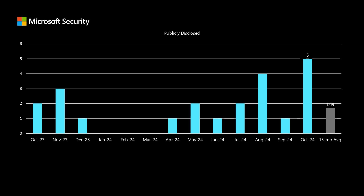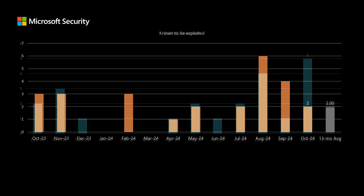These are vulnerabilities that were disclosed prior to release in one way or another — whether it's a security researcher blog, a Twitter post, or some other public channel. Another risk factor not represented in the CVSS score is whether that vulnerability is known to be exploited at the time of release. These are vulnerabilities where threat actors have already built exploit code and have been using it against customers. This month, there are two such vulnerabilities, right at our average of two per month over the past 13 months.